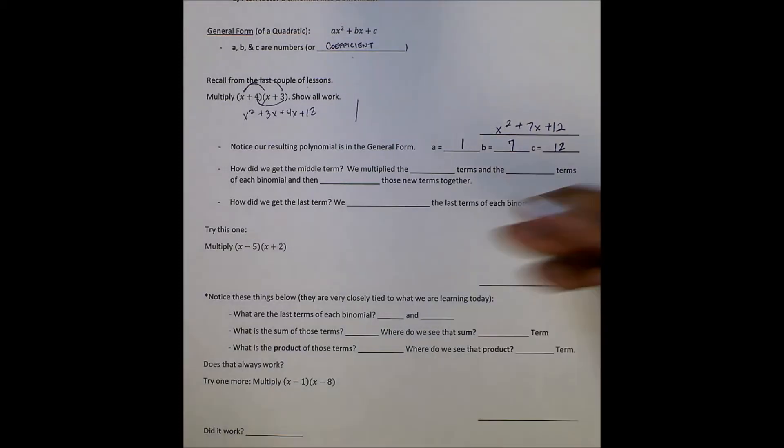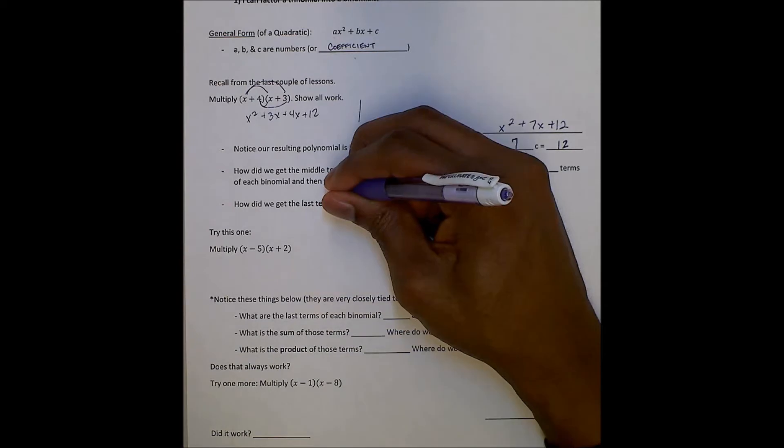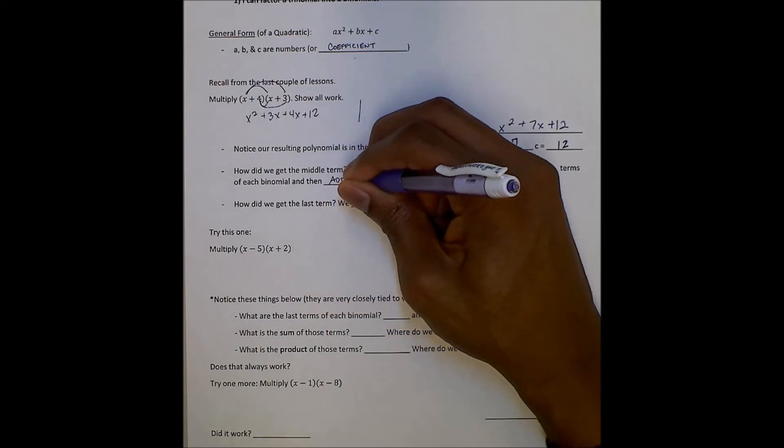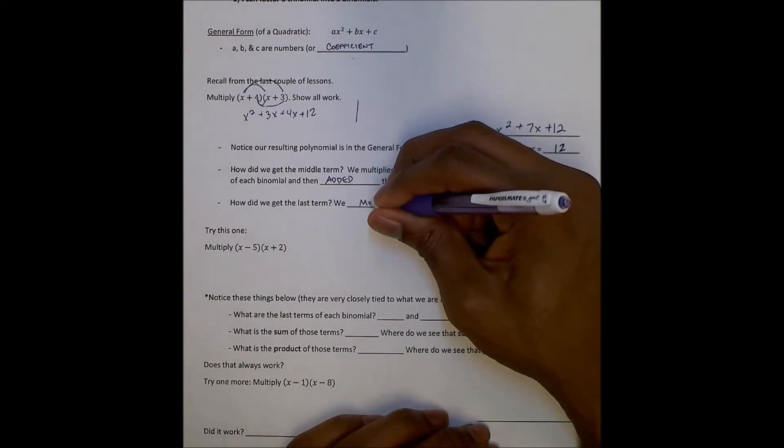Looking back, notice how we got the middle term. We multiply the outside terms and the inside terms of each binomial and then add the new terms together. And the last term comes from multiplying the last terms of each binomial.